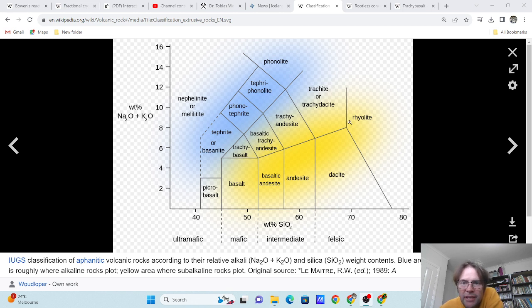On this graph, the subalkali rocks, you can see, get up to about 75 percent silica. The amount of sodium can get up to about 10 percent, with the baseline at zero.